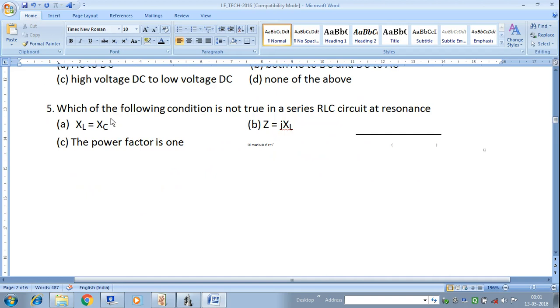Next question: Which of the following condition is not true in series RLC circuit at resonance? In series resonance, the condition is XL is equal to XC, that is inductive reactance is equal to capacitive reactance. Therefore, the circuit behaves as a purely resistive circuit. Therefore, power factor is 1. This is correct.